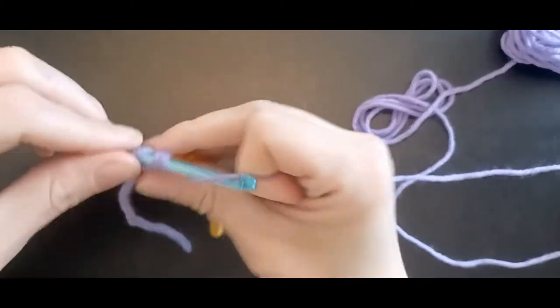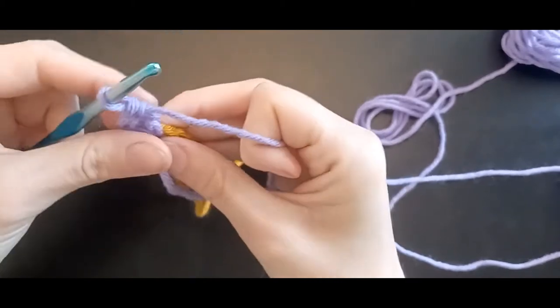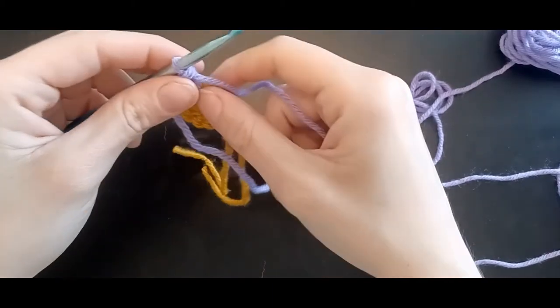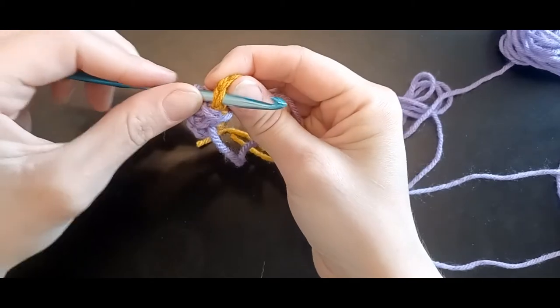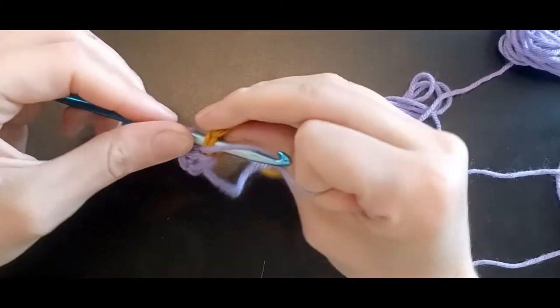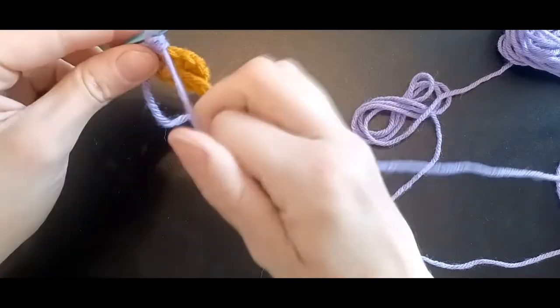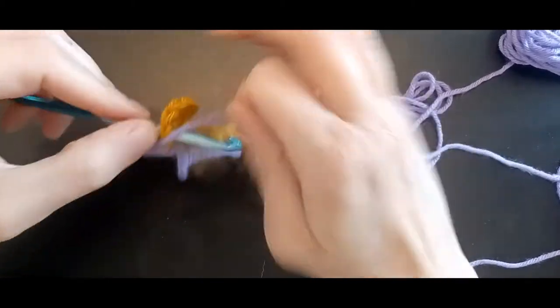Now in the next stitch you're going to do a half double crochet. So yarn over like you're doing a double, go through your stitch, yarn over, pull through, yarn over, pull through all three loops. In the next you're just going to slip over to the next stitch.